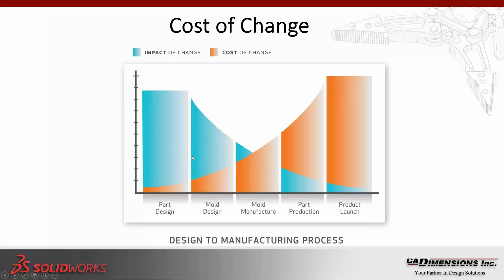The only thing you'll be paying for at the early design stage is the time involved in making that change. However, as you pass the manufacturing stage — where the mold is already manufactured and the part is produced — now you're talking about hardware. You're having to make actual changes to the mold, and sometimes the mold has to be completely scrapped and rebuilt. As you go down the product development cycle, the cost is actually rising.